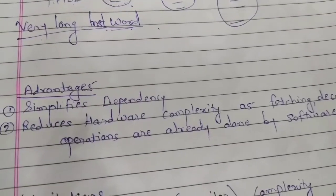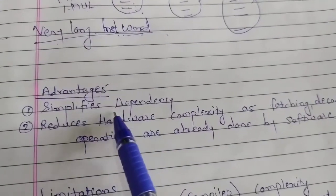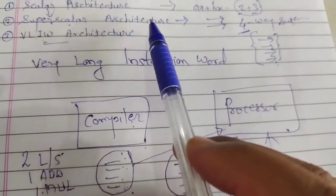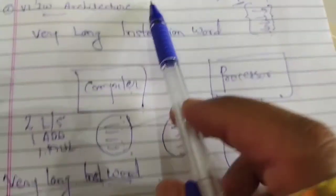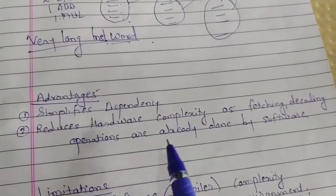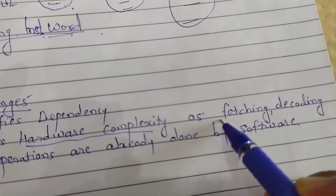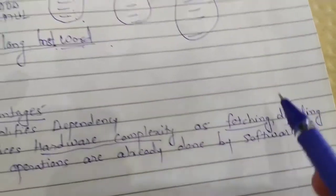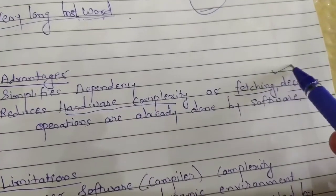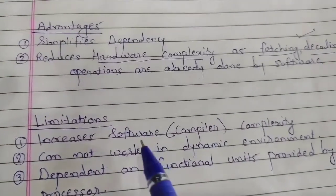If we discuss the advantages and limitations of a VLIW processor: first, it simplifies dependency — which was a disadvantage of superscalar architecture — at the compiler level only. Then it reduces hardware complexity, as most of the work, for example fetching and decoding, is done at the compiler level, so no additional hardware support is required for these operations. These are the advantages of the VLIW processor.